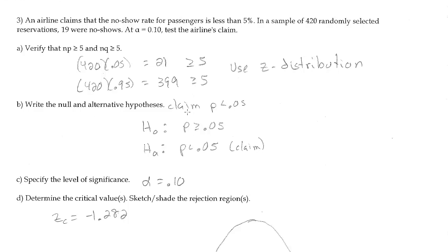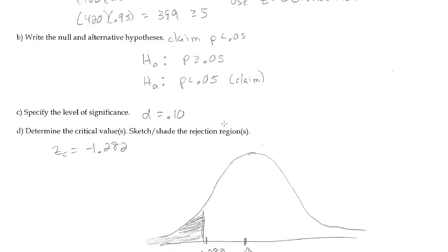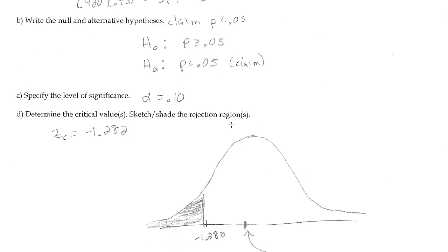We would identify the level of significance. And in this problem, we're told that's 0.10. And then we want to determine the critical value.